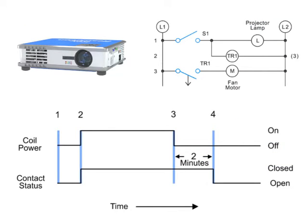Let's look at a common application of a normally open, timed open relay in the operation of a video projector. In this circuit, closing switch S1 turns on the projector bulb and activates timer coil TR1. With timer TR1 energized, normally open contact TR1 immediately closes, energizing the fan motor which controls the cooling of the projector. The projector bulb and the cooling fan remain on as long as switch S1 stays closed.